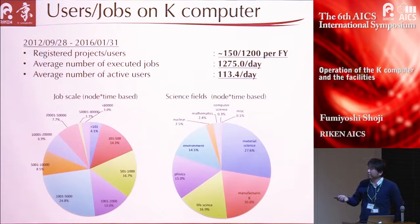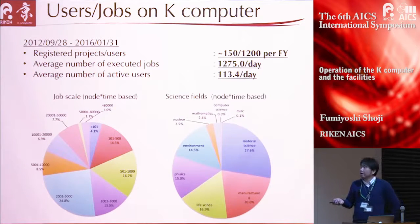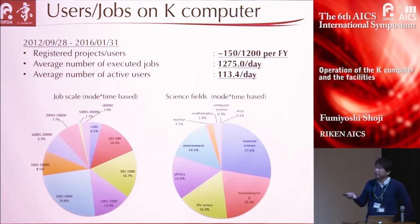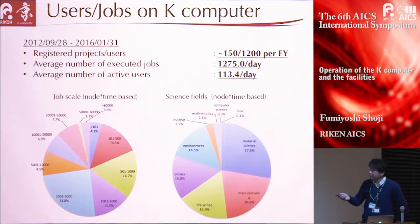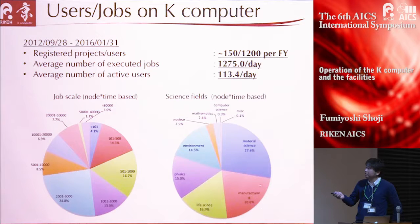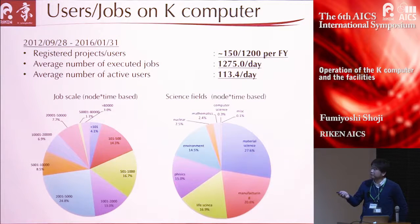These pie charts show the breakdown of computing time by job scale in the science field. We have five major fields of science: material science, manufacturing, life science, physics, and environment.